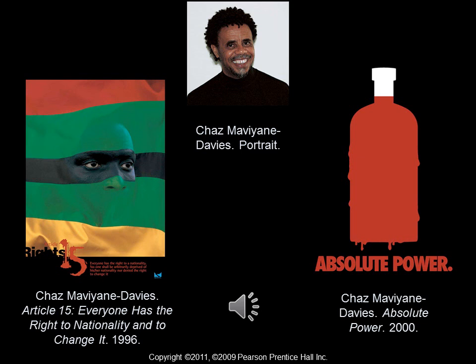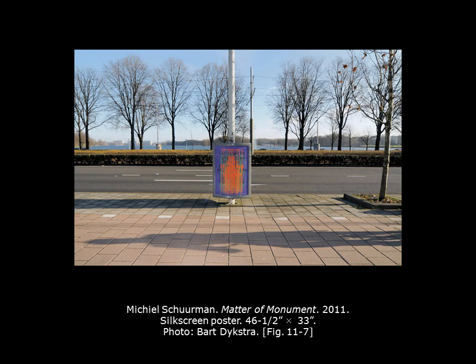Another poster by Davies protests the Robert Mugabe regime from 2000. Mugabe was known for brutal tactics in his rule. 'Absolute Power' is based on the design of Absolut Vodka advertisements. These silkscreen posters were made in Amsterdam to draw attention to the tourist trade, focusing on historical sites and the problems that come with restrictions on modernization of designated historical areas — social commentary presented as a monument for the viewer.